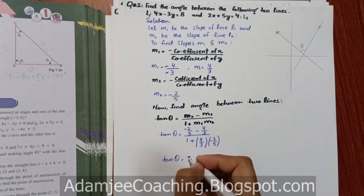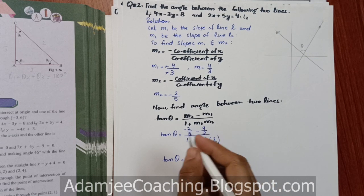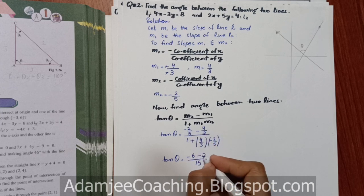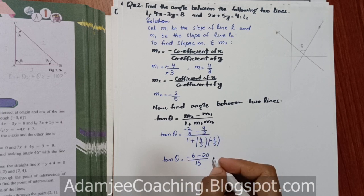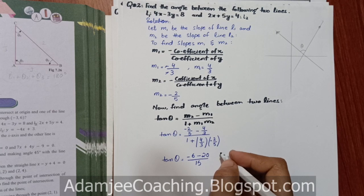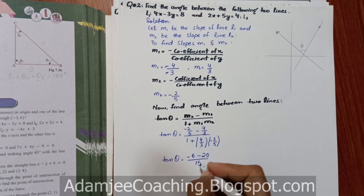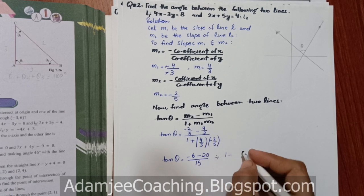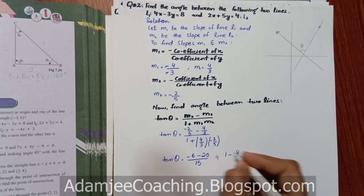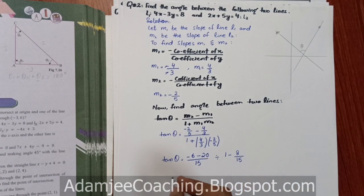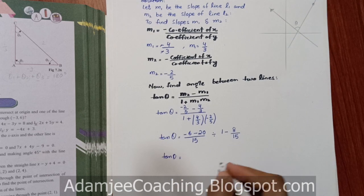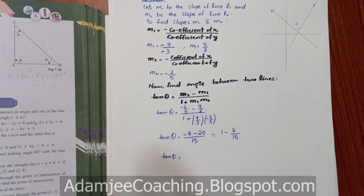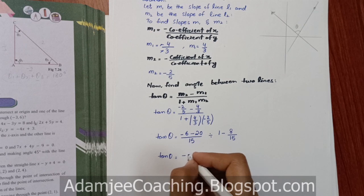Plus jo yeh ho jayega minus ka 2 x 3 is 6, cross multiplication kar lein. Minus 4 x 5 is 20. Then divide ho raha hai yeh. 1 plus minus, 4 x 2 is 8, 3 x 5 is 15. Tan theta equal to minus 6 upon 15.